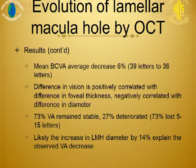The mean best corrected visual acuity decreased by 6%. The difference in vision was positively correlated with difference in foveal thickness and negatively correlated with difference in diameter, meaning that a thinner remaining foveal thickness or larger lamellar hole diameter corresponded to decreased vision. However, 70% of patients had their visual acuity remain stable, while 27% deteriorated. It was concluded that increase in the diameter of the lamellar hole likely explains the observed visual acuity decrease.